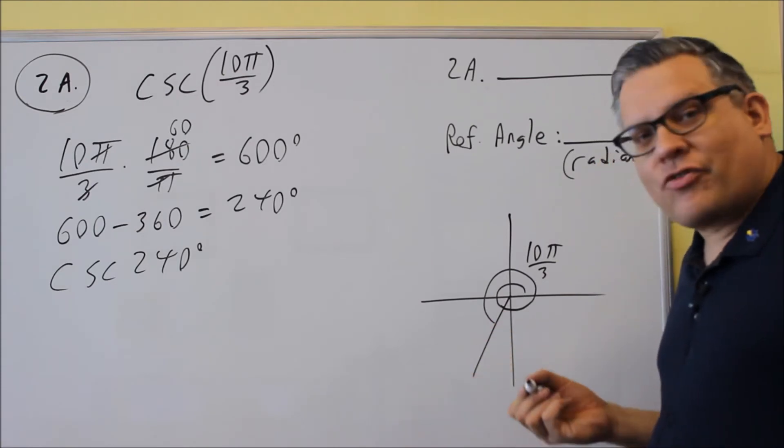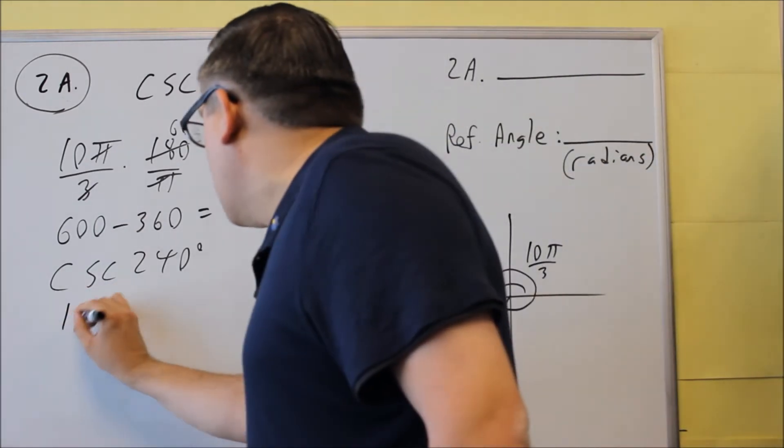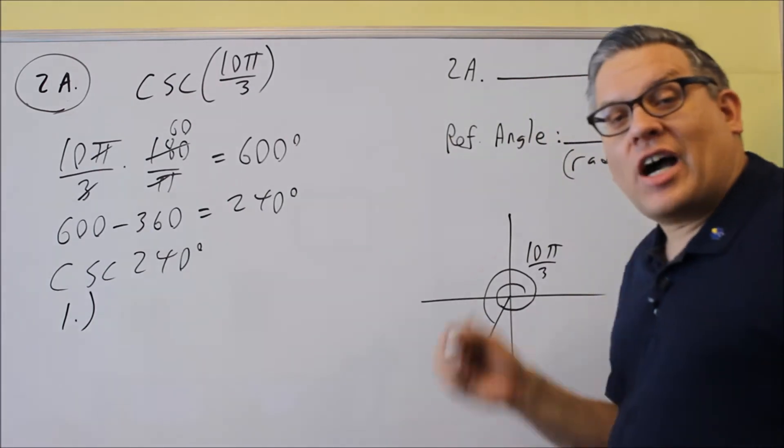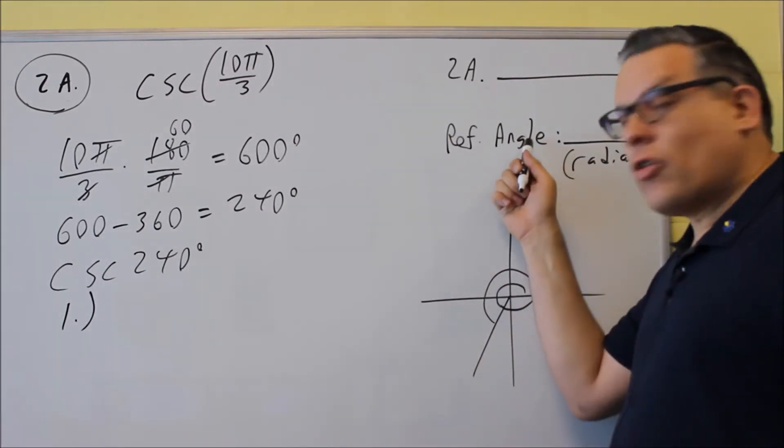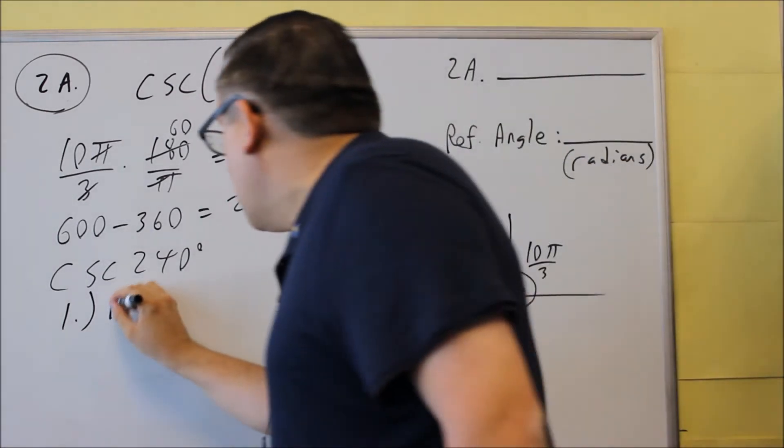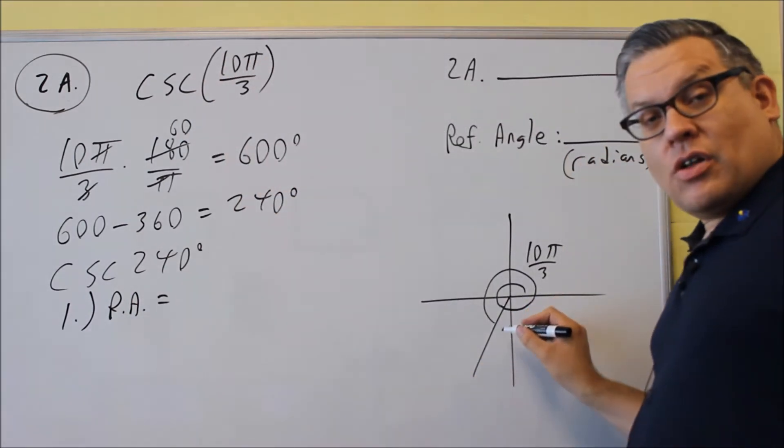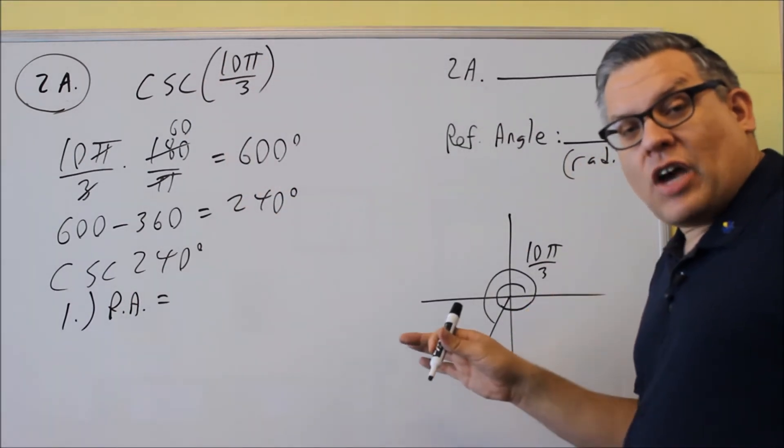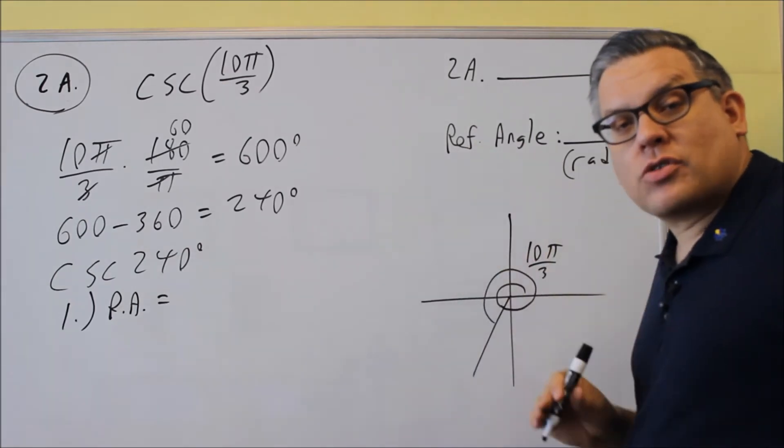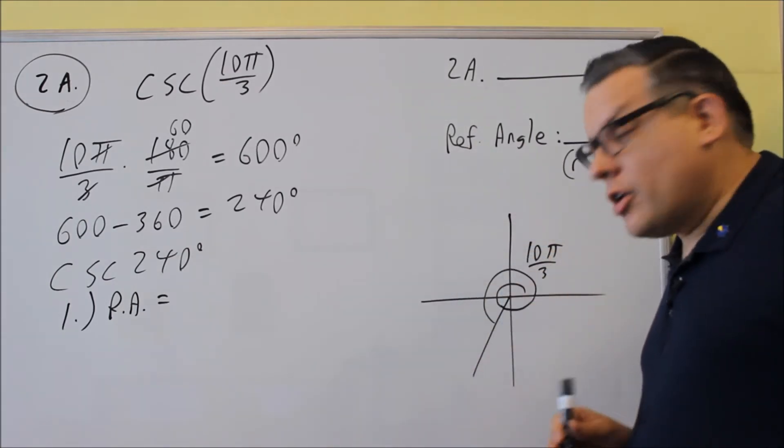Now the three-step process, the very first step that you're going to do, step number one, is to find the reference angle, which it asks for here anyway. So we're going to do RA, reference angle. Okay, now if you're in the third quadrant, so this is something else you want to have on your note card. You want to make sure you have all the formulas for the reference angles, depending on which quadrant you're in.